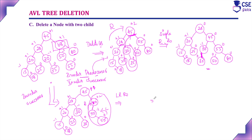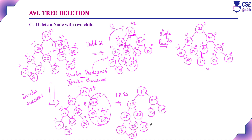Applying the LR rotation: 55 occupies the root node of this subtree, 50 becomes the left child of 55, and 80 becomes its right child. The root node and left subtree elements remain as-is. After checking the balance factor for this tree, it is still unbalanced at the root — left subtree has 4 elements and right has 2, so 4 minus 2 gives +2.